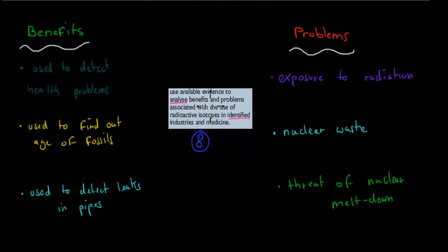And then use the available evidence to analyze benefits and problems in identified industries and medicines. So in your case, you have to actually find radioisotopes which you talk about specifically, and talk about the benefits and problems with those radioisotopes. But I'm going to cover them quite generally, because most of them have general problems and benefits. And then you can just apply to whichever one you've chosen to take. So for the benefits, they are used to detect health problems. So in many cases, for example, technetium-99 was one good one which allowed us to scan our body for problems.